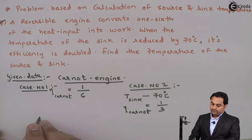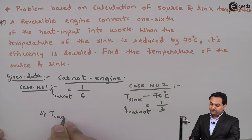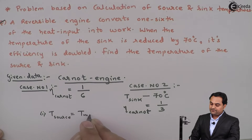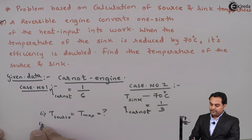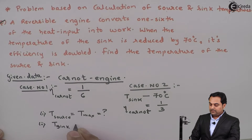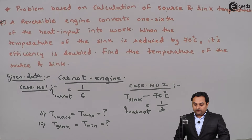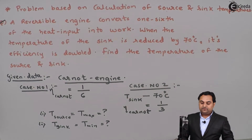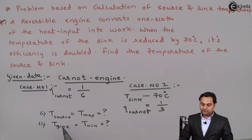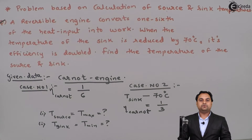We have to find out the temperature of the source — T_source, which I'll call the maximum temperature — and the temperature of the sink, which I'll call the minimum temperature. With the data available to us we need to find out the source and sink, that is the maximum and minimum temperatures.